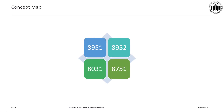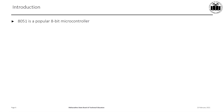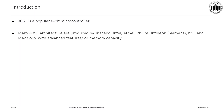The concept map shows the different segments of the 8-bit architecture such as the 8951, 8952, 8031 and the 8751. As an introduction to the derivatives of 8051 family members, 8051 is a popular 8-bit microcontroller and has been used in many applications since Intel introduced it. Many 8051 architectures are produced by Trisend, Intel, Atmel, Philips, and ISSI.